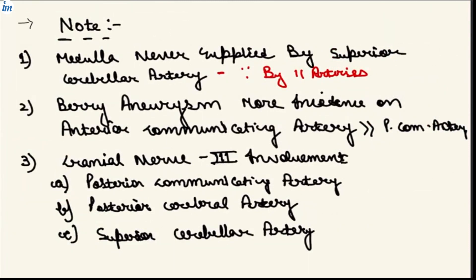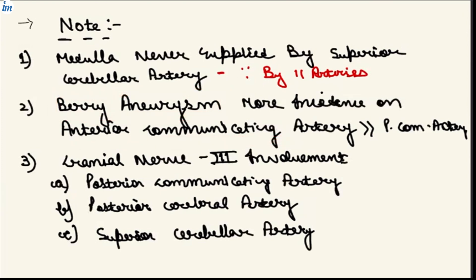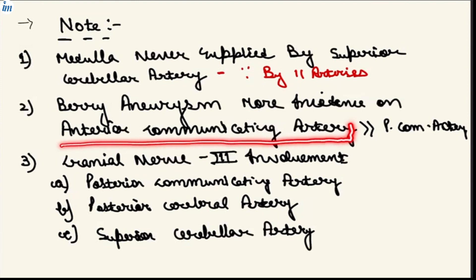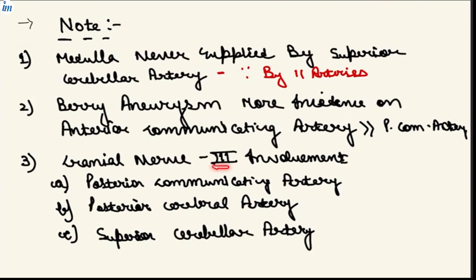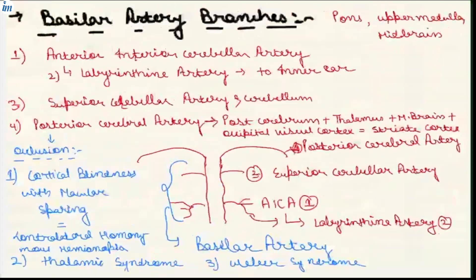Another recent MCQ topic: berry aneurysm has the highest incidence on the anterior communicating artery, more than the posterior communicating artery. If a berry aneurysm ruptures, it causes bleeding into the subarachnoid space — since the Circle of Willis is located in the subarachnoid space — leading to subarachnoid hemorrhage.